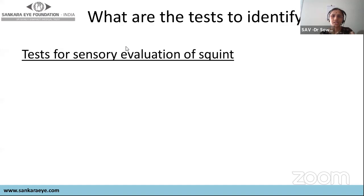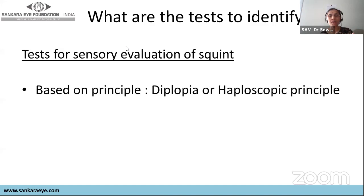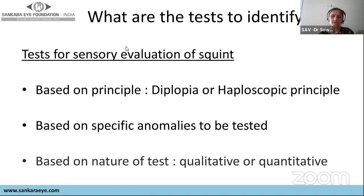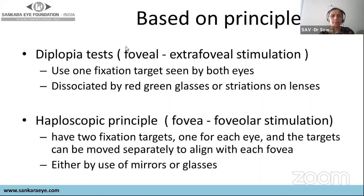Tests for sensory evaluation of strabismus can be classified by principle (diplopia principle vs. haploscopic principle), by specific anomaly tested (ARC, suppression), or by nature of the test (qualitative vs. quantitative). These classification frameworks help organize how we approach sensory evaluation.